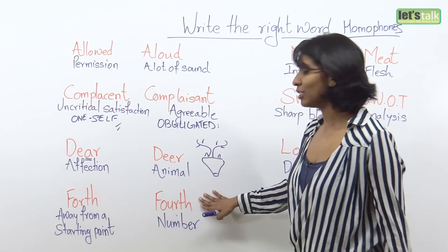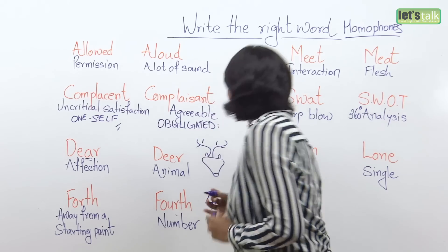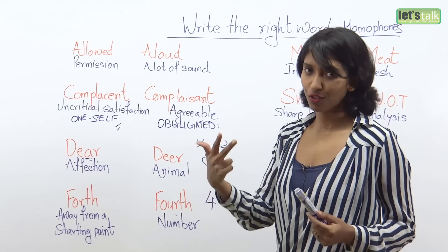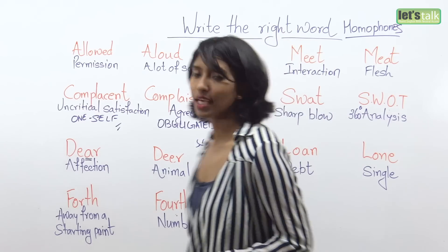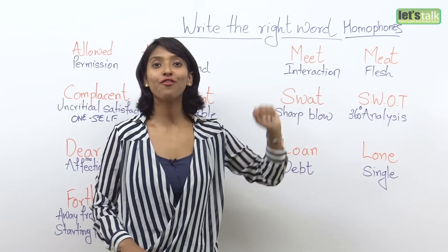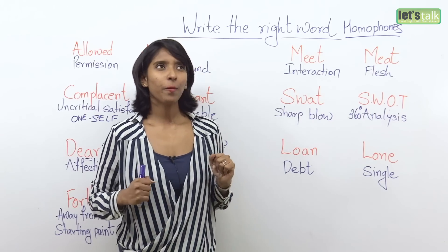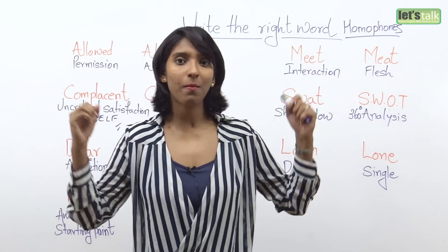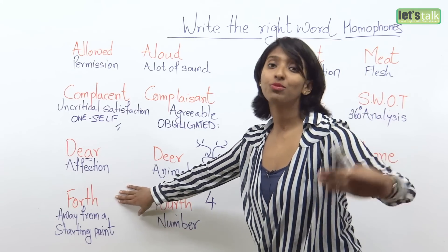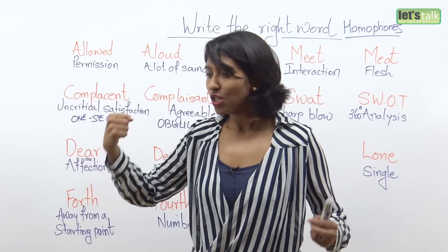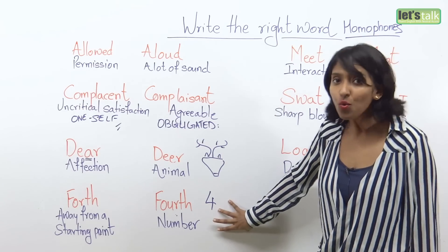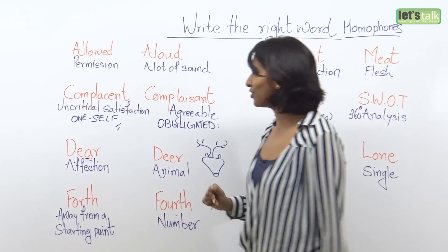The other word which sounds very similar is 'fourth' — it's a number, the number four. You use it like: first for one, second for two, third for three, and fourth for four. For example: person XYZ is the fourth child in the family, or China is ranked fourth amongst the largest economies in the world. You cannot say 'bring forth' when you mean the ordinal number, nor 'China is the forth economy.' The right spelling is F-O-U-R-T-H. Forth and fourth sound very similar but mean different things.